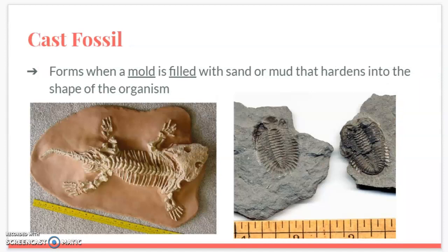Our second type of fossil is a cast fossil. This forms when a mold fossil is filled up with sand or mud that hardens into the shape of the organism. It might look like bones or the organism itself, but there are no actual living remains — it's basically just rock in the shape of that organism. Using the ice cube tray analogy, the cast fossil is like the actual ice cube. My trilobite fossil on my desk is a good example — no part of the actual trilobite is in it; it's just rock in the shape of a trilobite.